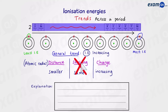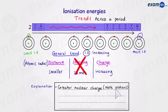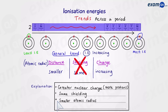Here's the explanation. As we go from left to right, we have a greater nuclear charge — there are more protons. The shielding remains the same. However, the atomic radius gets smaller as we go towards the right. And finally, there's a stronger attraction between the nucleus and the outer shell. Use these points if you ever have to explain the general trend in the first ionization energy across a period.